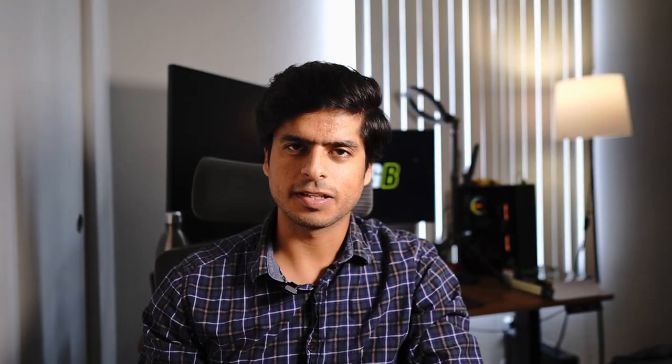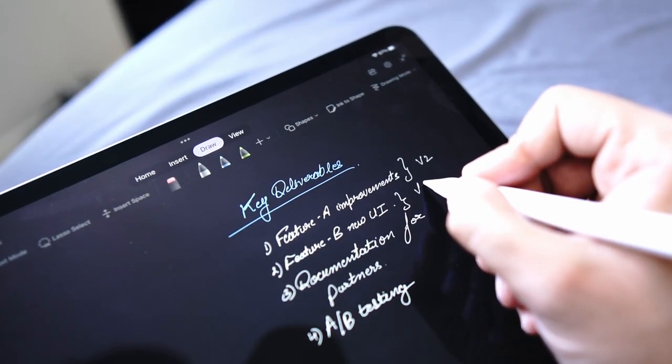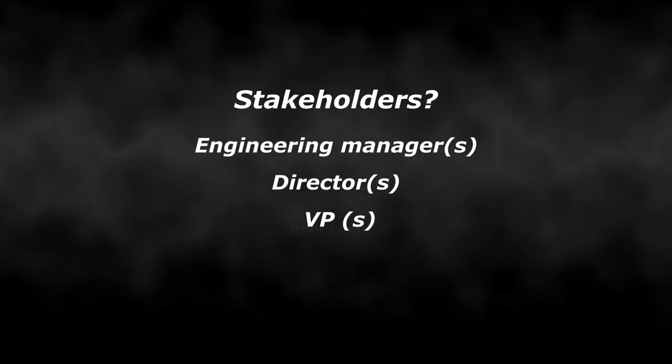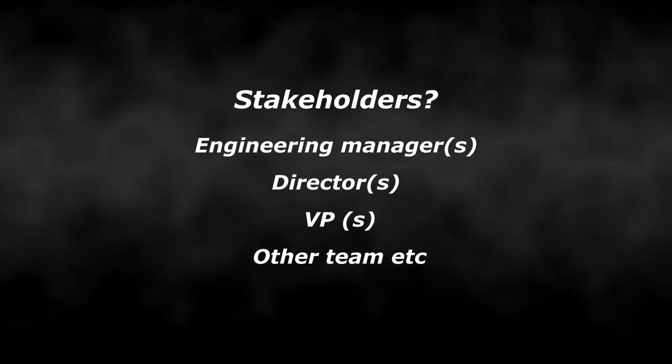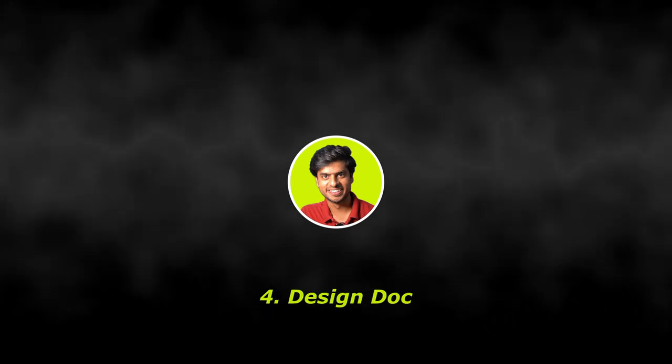Third: project plan. This is where things start to get technical, and it's generally prepared by the tech lead or the software engineer working on the project. It contains information like key deliverables, what milestones they fall under, who the key stakeholders are, whether there are dependencies on other teams, and all documents and mailing lists.